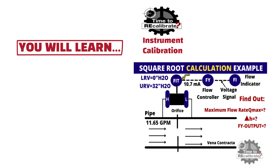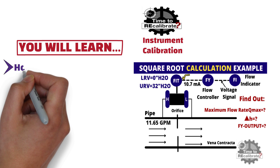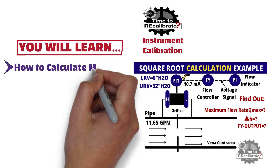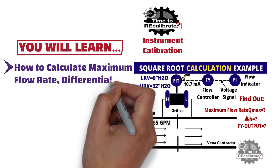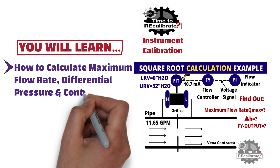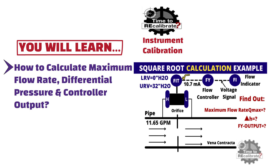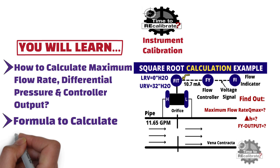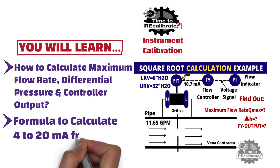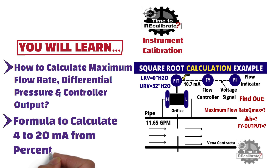In this video, we will take one example to learn how to calculate maximum flow rate, differential pressure, and controller output. In addition to this, we will learn about the standard formula to calculate 4 to 20 mA from percentage.